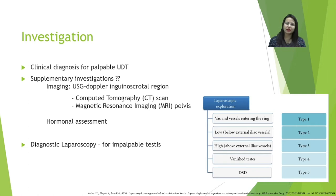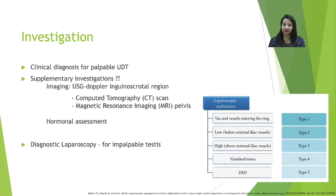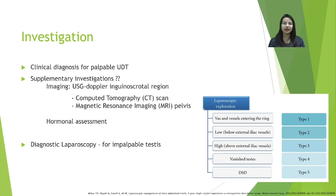Imaging has very low sensitivity and specificity in cases of undescended testis, and similarly hormonal assessment has limited routine utility. However, for bilateral undescended testis, hormonal assessment can be pursued, and in suspected cases of disorder of sexual differentiation, additional investigations such as ultrasound, MRI, or MRU may be indicated. For a routine, clear-cut case of unilateral undescended testis, no investigation is required.